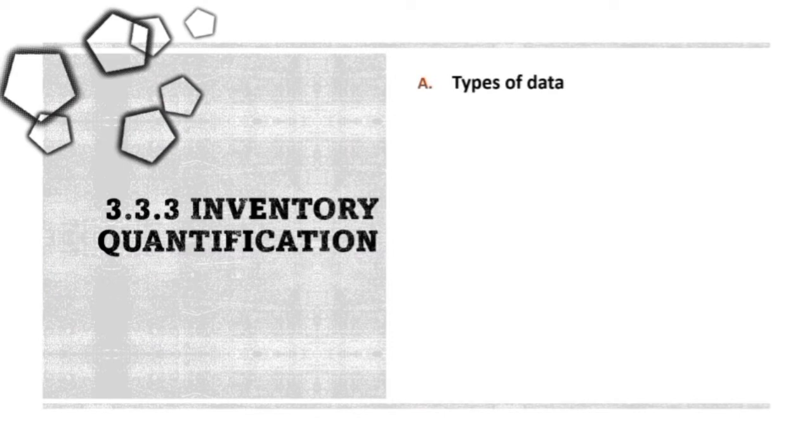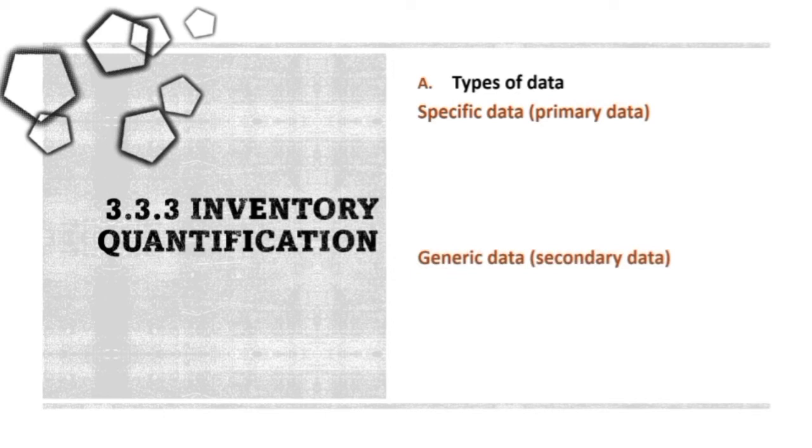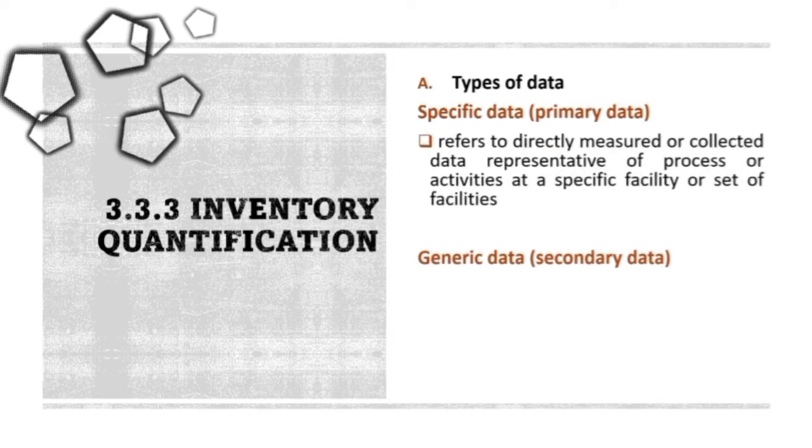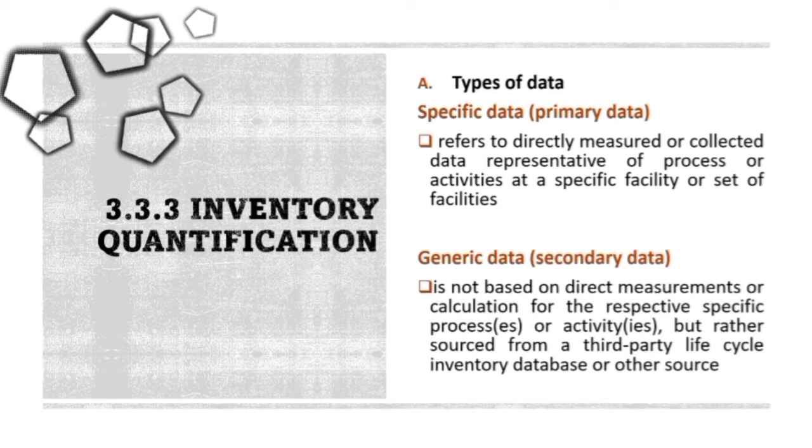In the inventory quantification, there are two general types of data that can be used which are specific and generic data. Specific data refer to directly measured or collected data representative of process or activities at a specific facility or set of facilities. Generic data, also called secondary data, is not based on direct measurements or calculation for the respective specific process or activity, but rather sourced from a third-party lifecycle inventory database or other source.